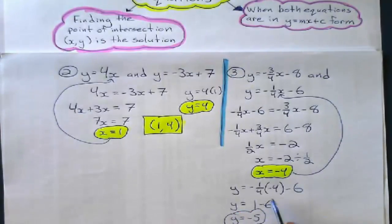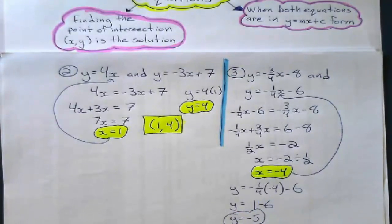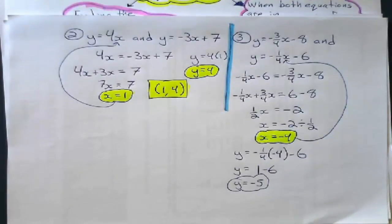That means y is negative 5. Of course it is. Let's circle that. Check everything. Okay. So, my point of intersection for that is negative 4, negative 5.